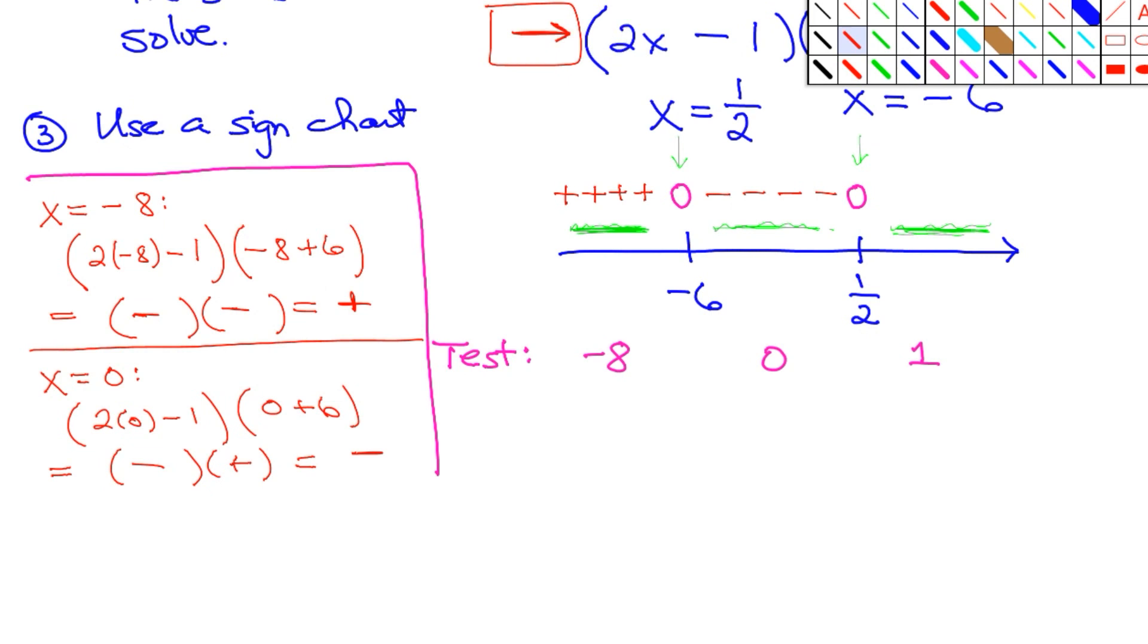And then lastly, if we check x equals 1, we get (2(1) - 1)(1 + 6). That equals a positive times a positive, which is positive. And this is the sign chart. So you'll be asked to compute the sign chart for certain things.